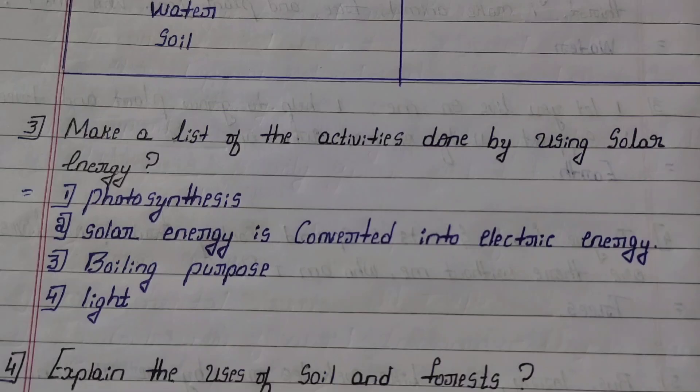Third question: Make a list of the activities done by using solar energy. Answer: First, photosynthesis. Second, solar energy is converted into electric energy. Third, boiling purpose. Fourth, light.